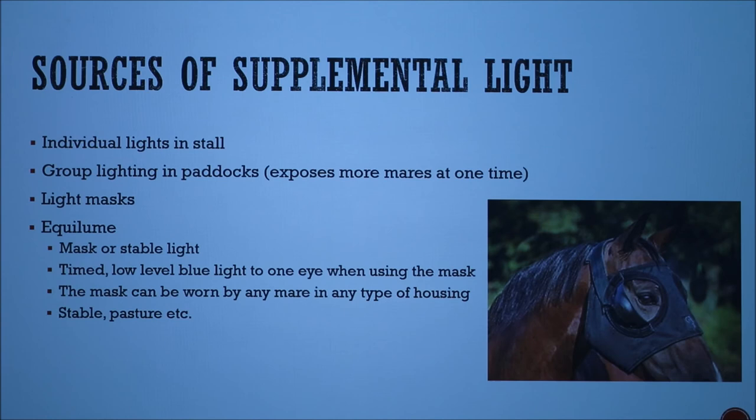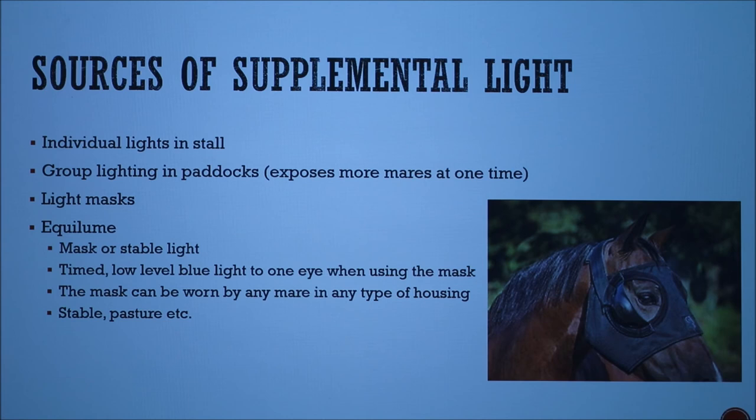There are various sources of supplemental light. There can be individual lights in the stalls for each mare, or group lighting in paddocks to manage more mares at one time. There are also new products called light masks — specifically the Equilume — which comes in both masks and stable lights. The mask delivers a timed, low-level blue light to one eye. It can be worn at any time in any type of housing, so mares can be kept on pasture, and it decreases labor needs and maintenance costs.